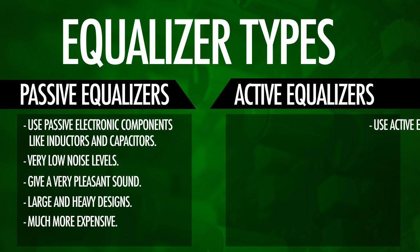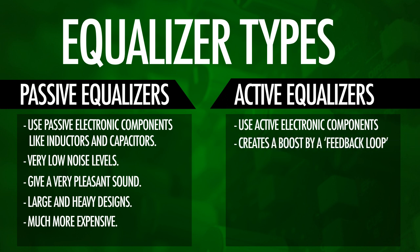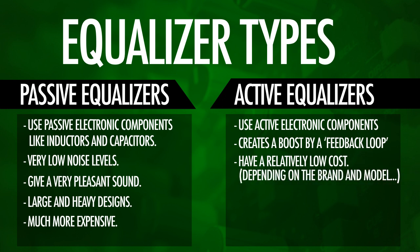Active equalizers use active electronic components. Active equalizers are capable of creating a boost which is achieved by a feedback loop that sends the selected frequency back through the amplifier. This means that equalizing your signal can actually create a little bit of phasing. These active EQs do have the advantage of having a relatively low cost, depending on the brand and the model. They're fairly lightweight and they offer a good boost and cut level.